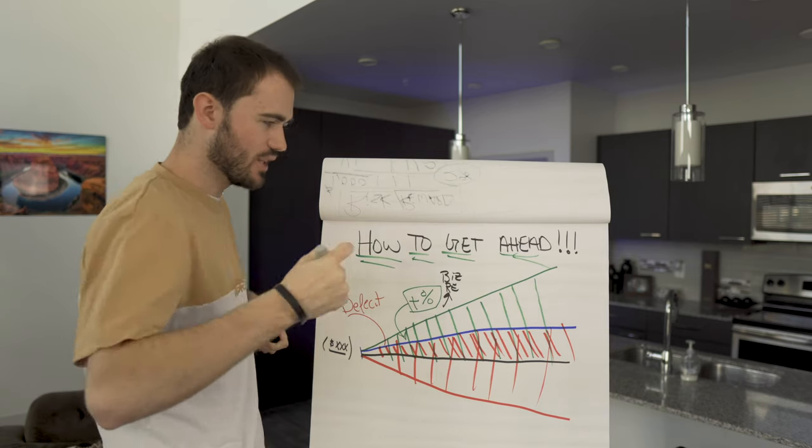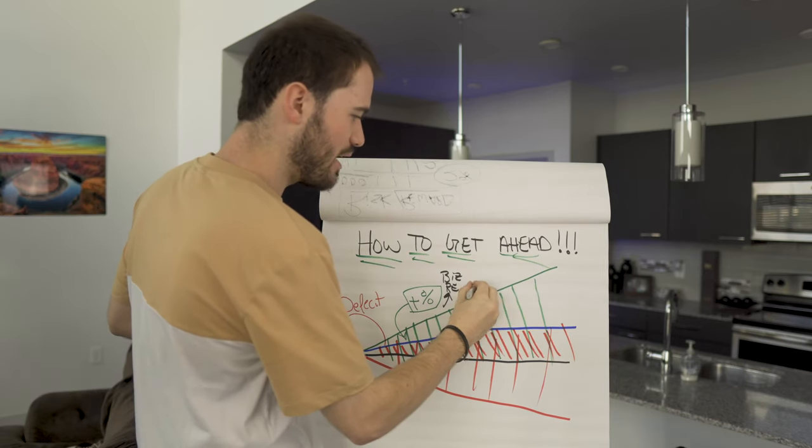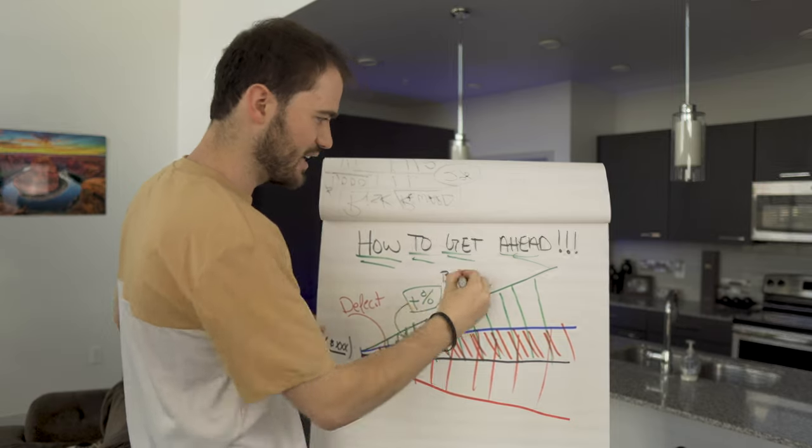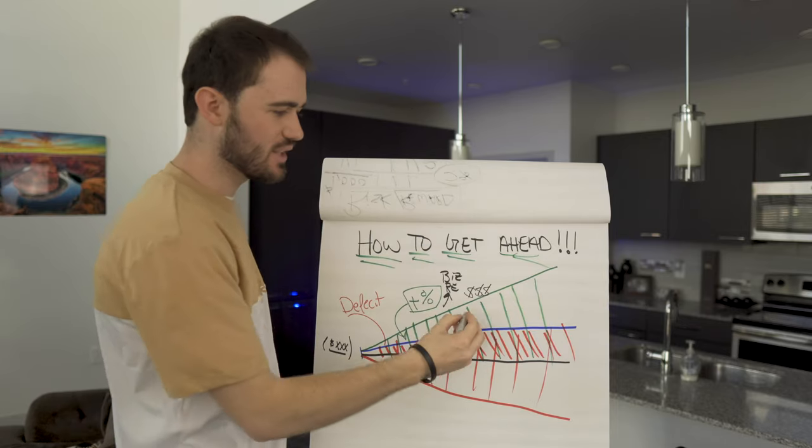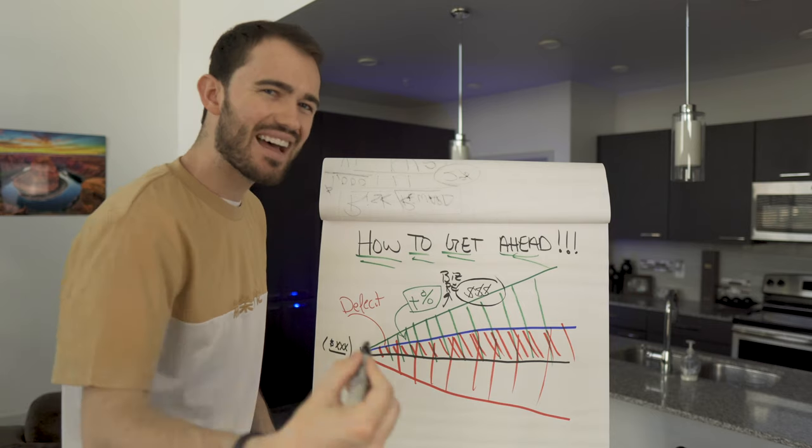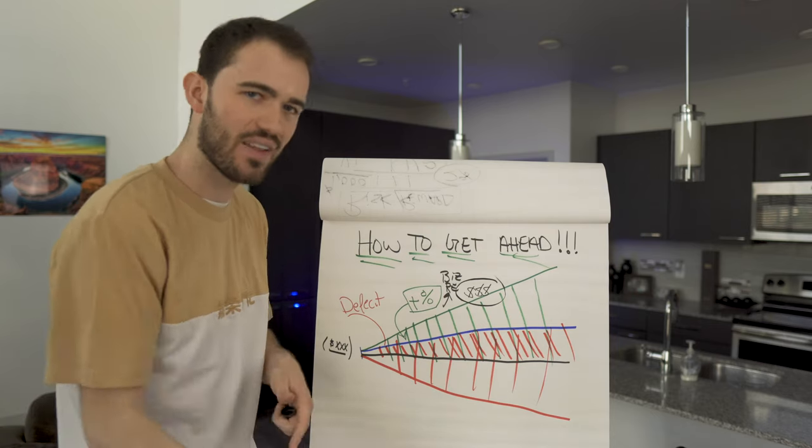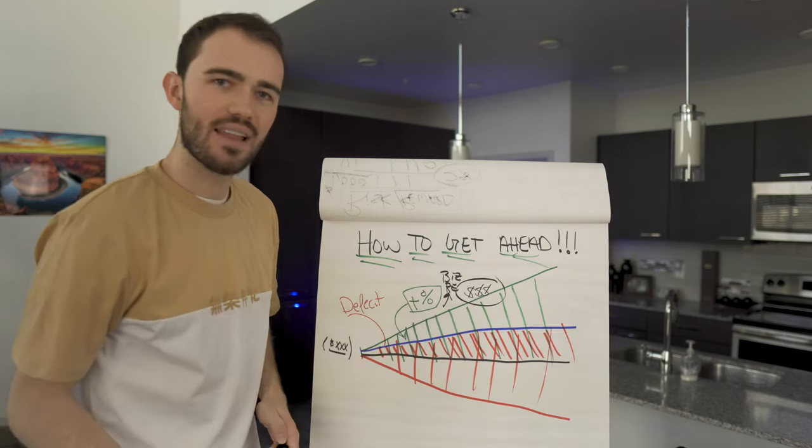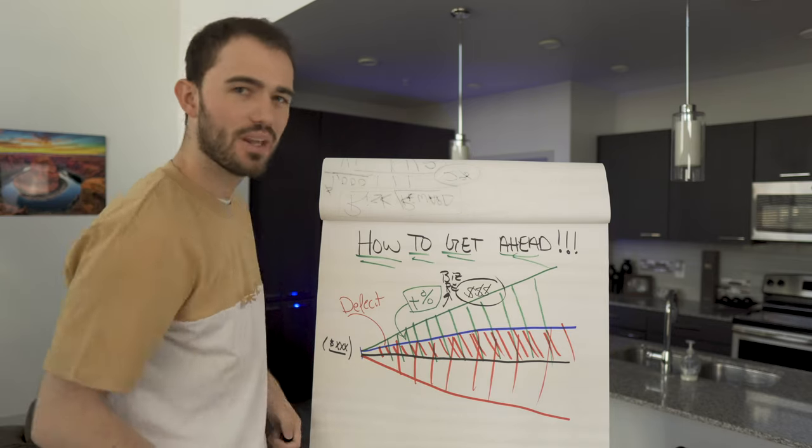The money that they make along this path at first is then reinvested again and again. Eventually, it's going to be so much that then that's how they buy the expensive luxuries. That's how they're traveling all the time. That's how they have the nice cars, because they're now using that money, not that money, to pay for it.